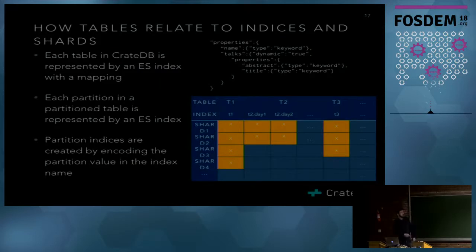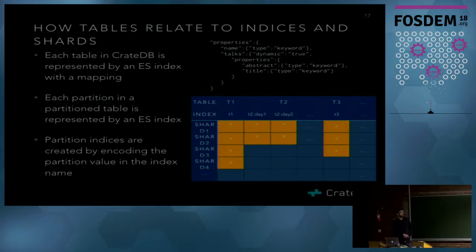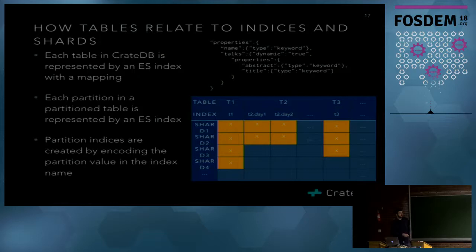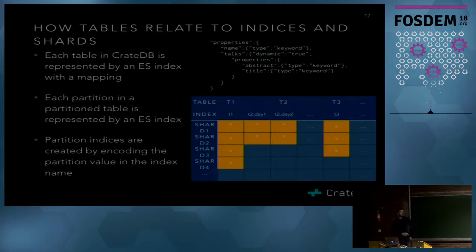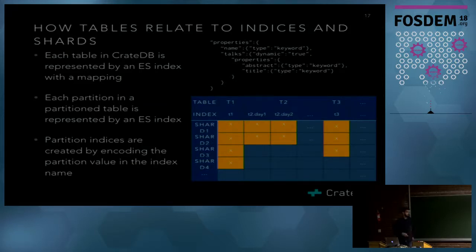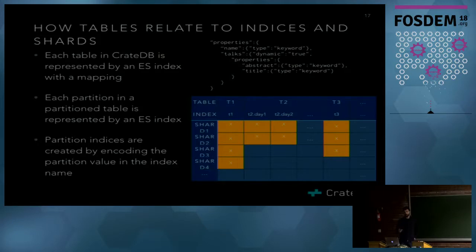If you have a normal unpartitioned table like T1, you have one Elasticsearch index called T1 with four shards. Another table might have three shards — these are separate. Then you have a partitioned table T2: partitions are created for each new value, such as each year or each day. You create a new index for every year or every day, which is handy for performing operations on a year or day basis as you would in time series analysis.